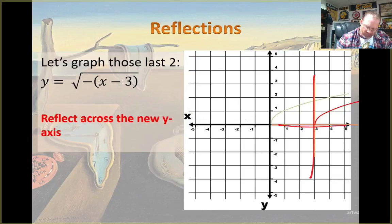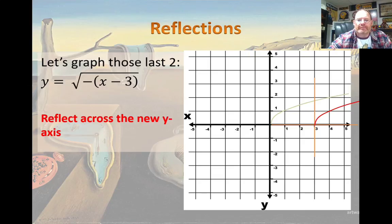This is our new axis. My reflection occurs from here to there. That is the final graph. And we're still mindful of that 1,1.